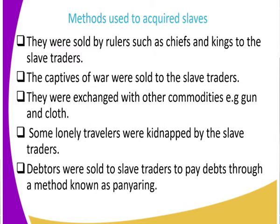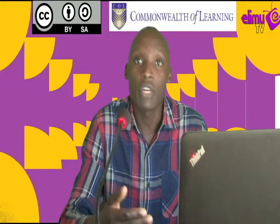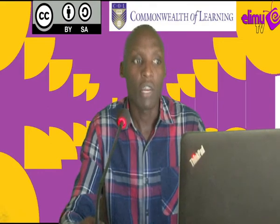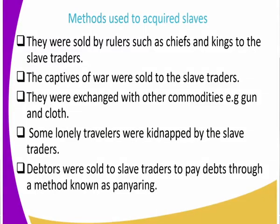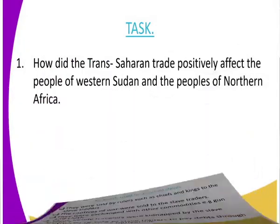Another method was kidnapping — you could be walking alone, be found, and be kidnapped and sold into slavery. Finally, debtors were sold as slaves: if you owed someone a large debt, instead of paying the money you could be sold as a slave. Those are some of the methods that were used to acquire slaves.